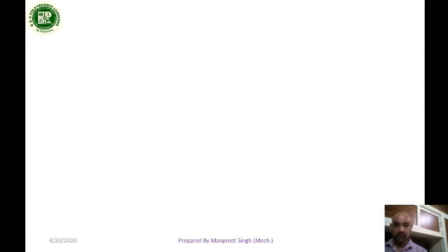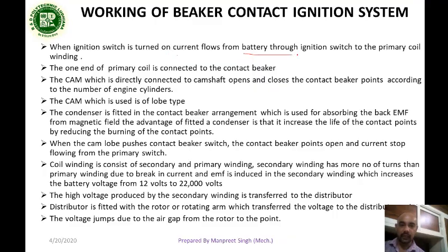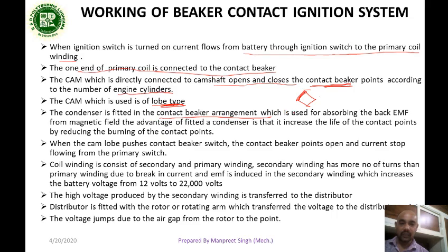Let's study how it works. When the ignition switch is on, the current flows from the battery through the ignition switch to the primary coil winding. One end of the primary coil is connected to the contact breaker. The cam, which is directly connected to the camshaft, opens and closes the contact breaker. The condenser is fitted in the contact breaker arrangement and is used for absorbing the back EMF from the magnetic field.